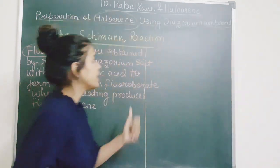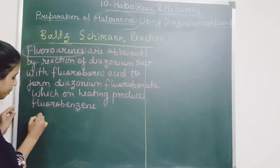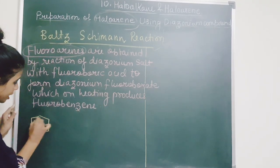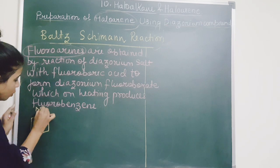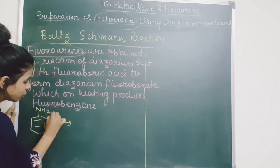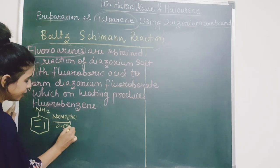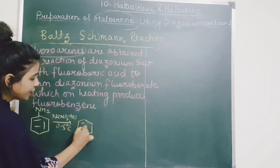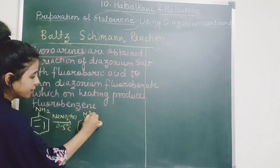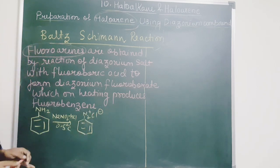So what exactly are we doing in the preparation of fluorobenzene? This is your aniline group. First you are carrying out diazotization in presence of NaNO2 and HCl at 0 to 5 degrees Celsius and you are converting it into N2+ Cl-, that is your diazonium salt. What next?